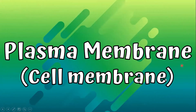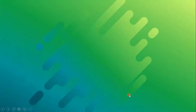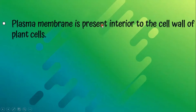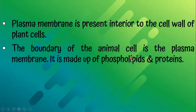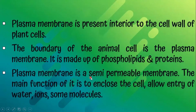Plasma membrane, also called the cell membrane. The plasma membrane is present interior to the cell wall of plant cells. The boundary of the animal cell is the plasma membrane, and it is made up of phospholipids and proteins. The plasma membrane is a semi-permeable membrane, and its main function is to enclose the cell and allow entry of water, ions, and some molecules.